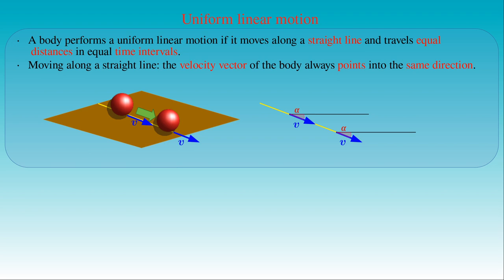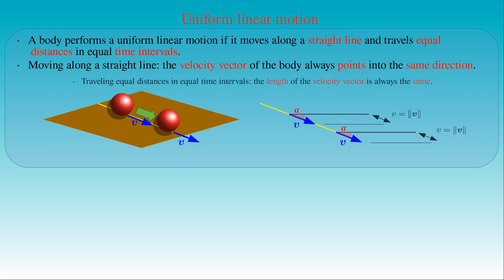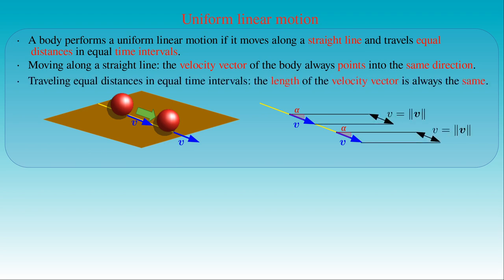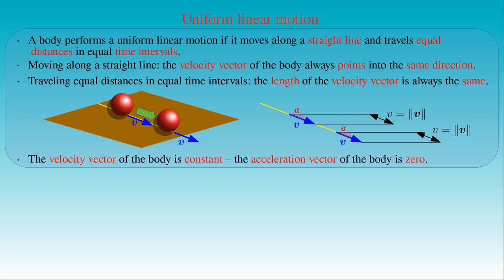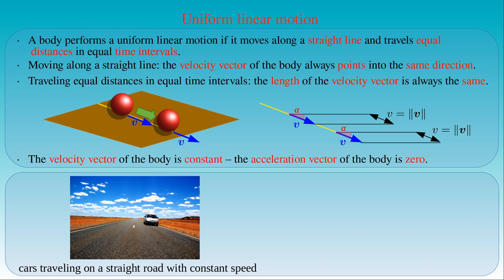The angle alpha between the velocity vector and a fixed direction remains the same during the motion. If the moving body is traveling equal distances in equal time intervals, then the length of the velocity vector is always the same along the trajectory. Then we can see that the velocity vector of the body is constant during the motion. As a result, the acceleration vector of the moving body is zero. A typical example for uniform linear motion is a car traveling on a straight highway with a constant speed.